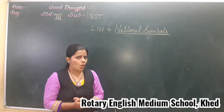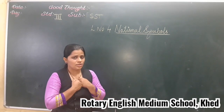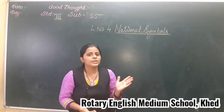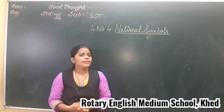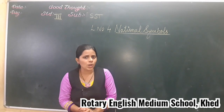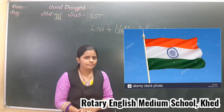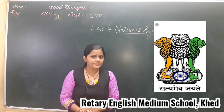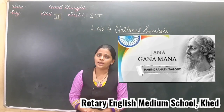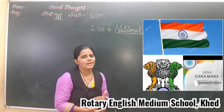National Symbols are prior to our nation, and also it reminds us about the glorious past. So in the last video, we discussed the three main symbols — that is, National Flag, National Emblem, and National Anthem. Hope you have understood about these three main symbols.